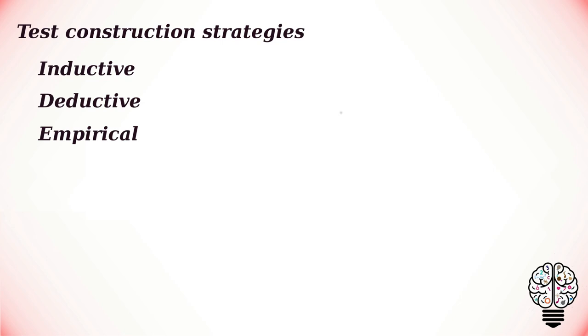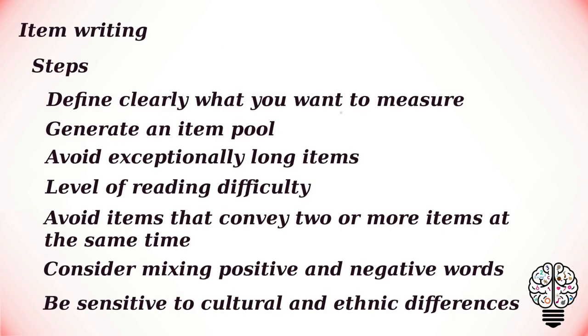The two important aspects of test construction are item writing and item analysis. An item can be defined as a simple question or task that is not usually broken down into smaller units. Item writing involves a number of steps. The first is to define clearly what you want to measure—it will mostly be a type of cognitive achievement, either a skill or knowledge, or a type of affective trait. The items should be made as specific as possible.